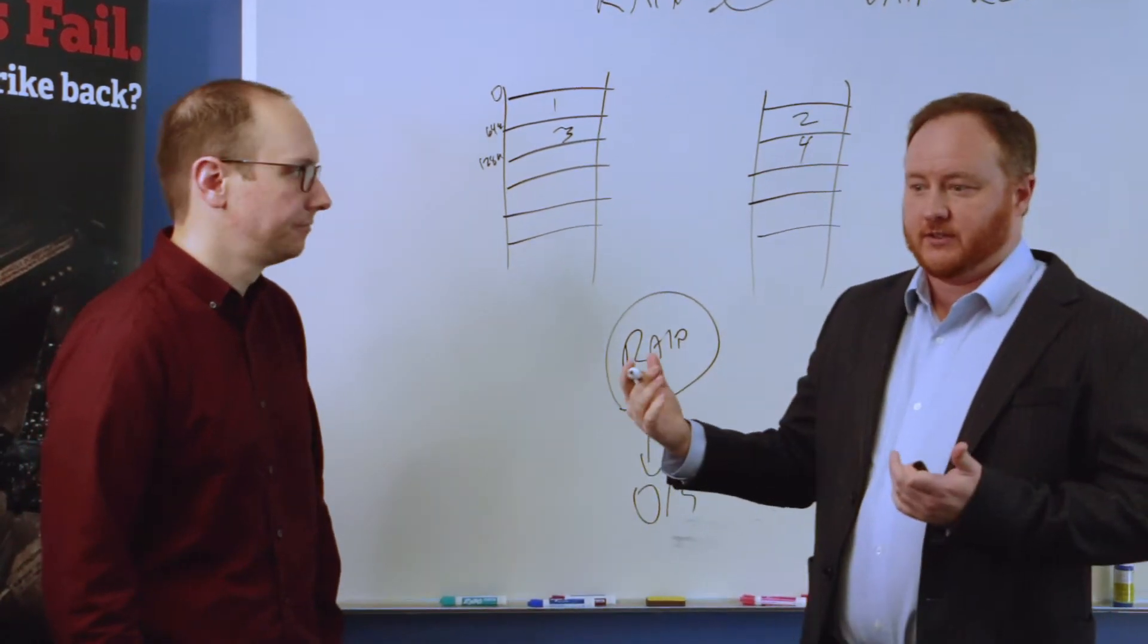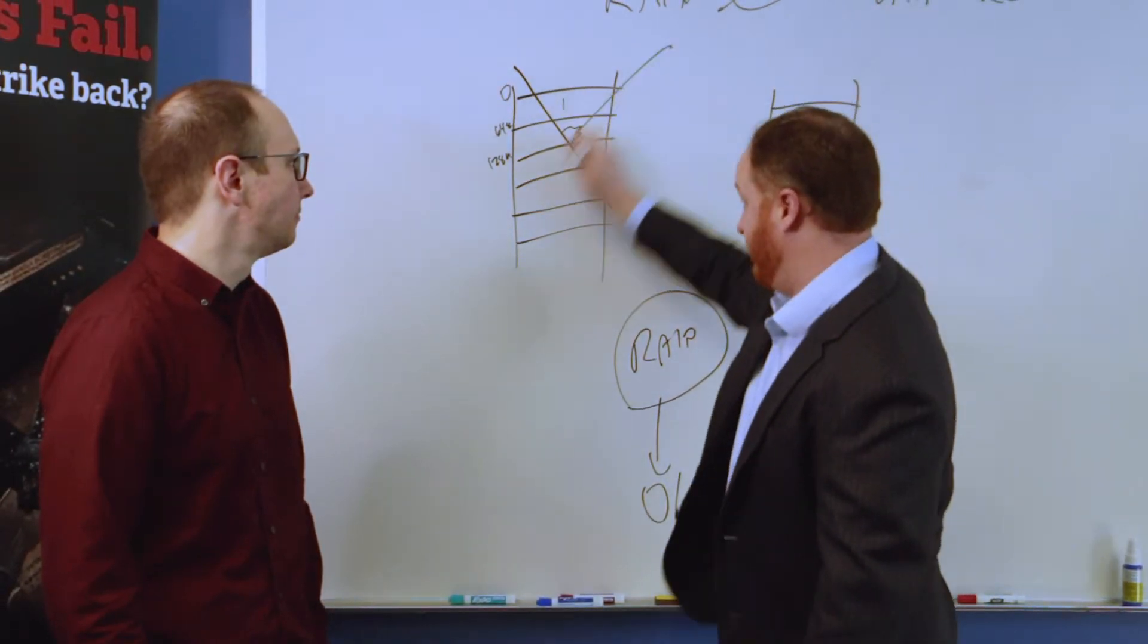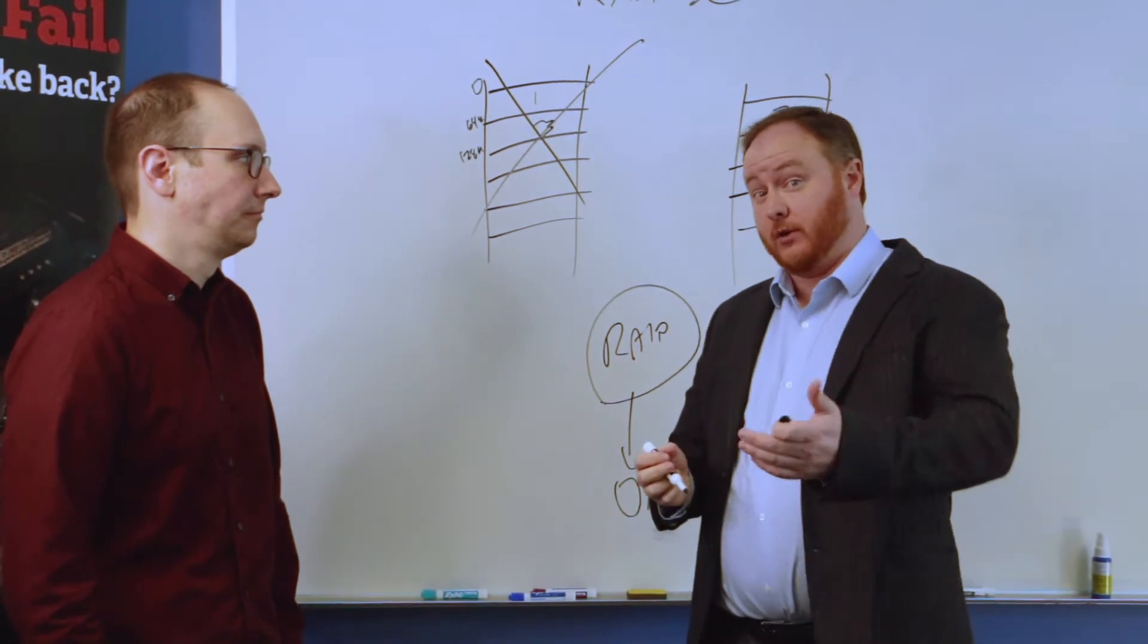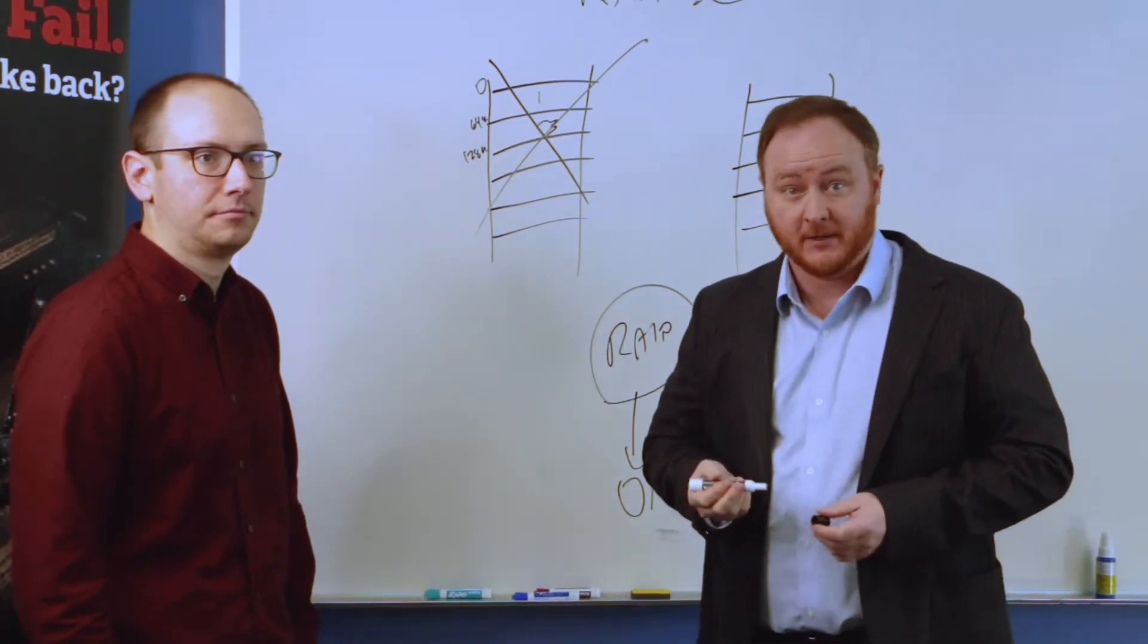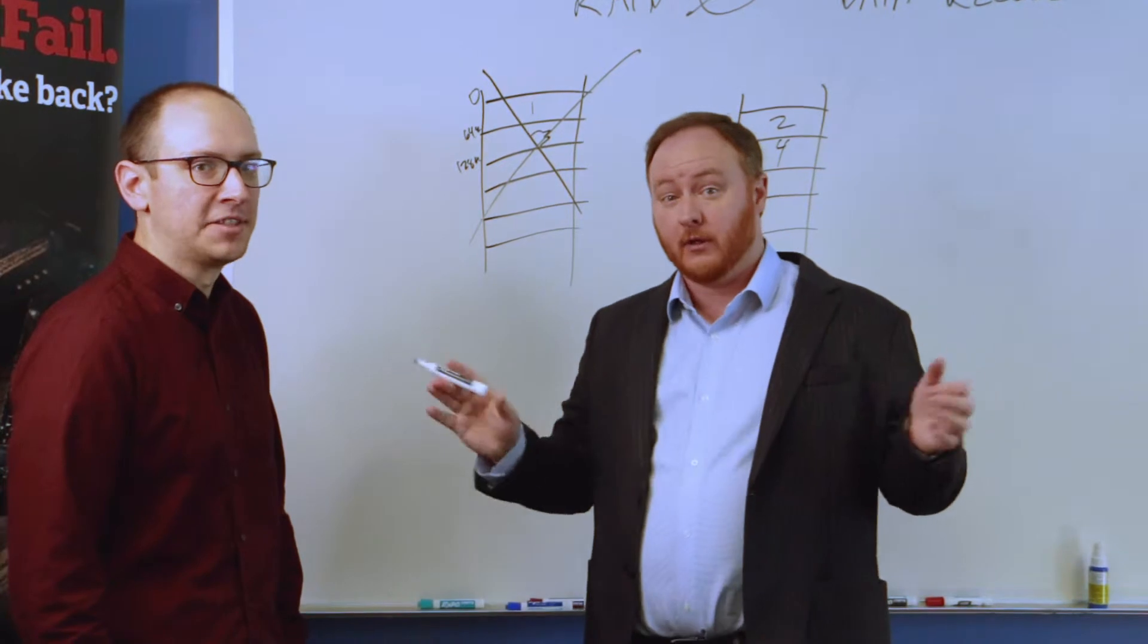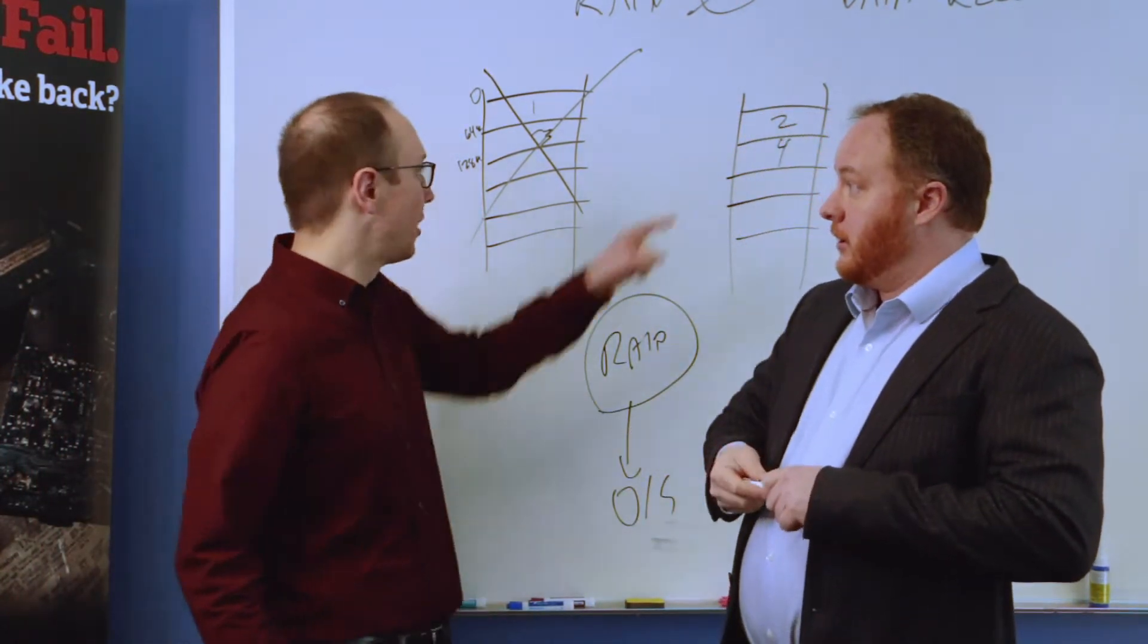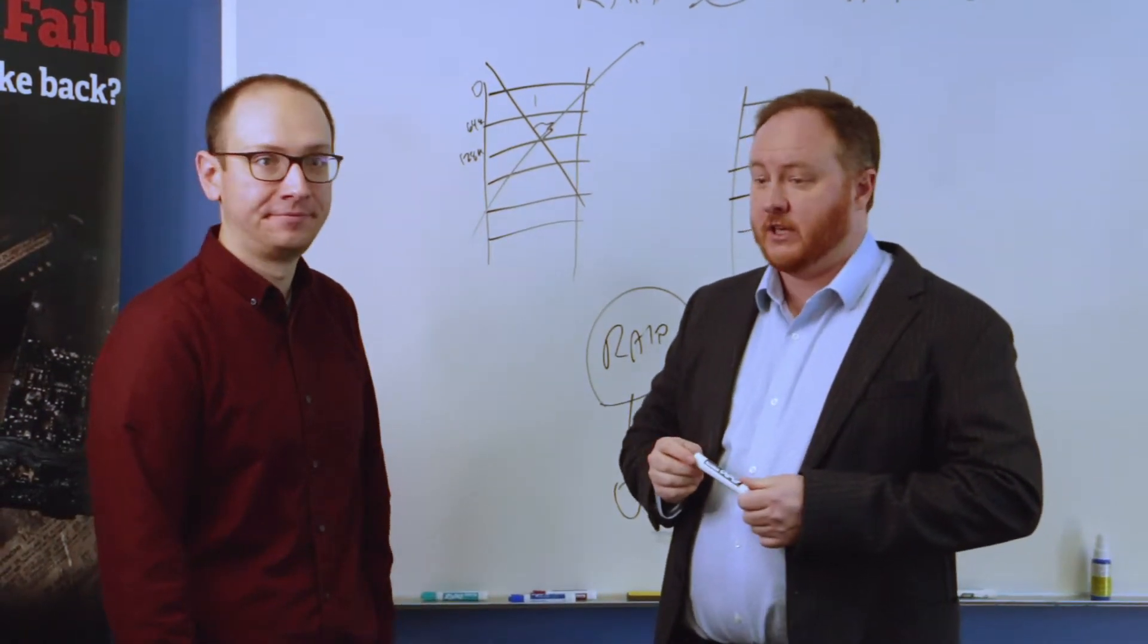And what happens when a disk goes bad is we're left with half the blocks. This video that we're shooting is probably going to be hundreds of megabytes big, and we would have half of the blocks for it. That video would not function at all. It's not like you just have the front half or the back half of the video, you would have every other 64 kilobytes, which for most data types is absolutely worthless.